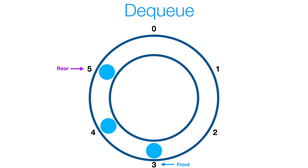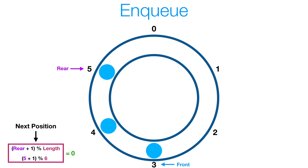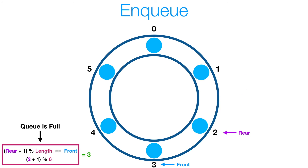Now let's look at some more enqueue operations to show you that circular process. Here our rear is at the last index in the array. To get the next index, all we do is take 5 plus 1 and then divide it by 6 and use that remainder. So that's 6 divided by 6, which gives us a remainder of 0. So our next index is going to be 0. At the point where rear plus 1 modulo length gives us the front index, then we know we've filled our entire array and we have no more space.